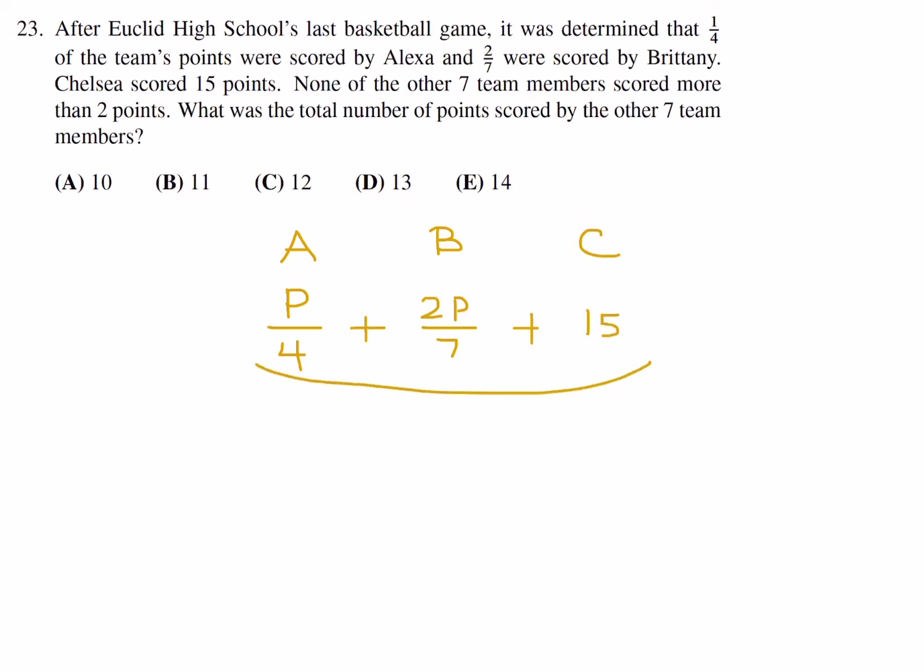Brittany scores 2p over 7. And then Chelsea scores 15. Now this sum will basically be the sum of those three. We also have to consider that there's seven other team members. But let's just figure out this, what it gives me in terms of a fraction. 7p plus 8p over 28 plus 15, and that is 15p over 28 plus 15. Now, the number of points scored has to be an integer. So that means this has to be an integer. And that means that p must be a multiple of 28. That's the only way this is going to be.